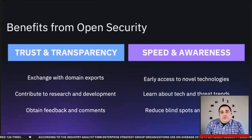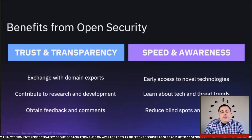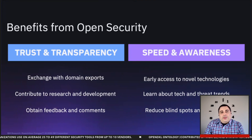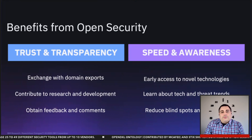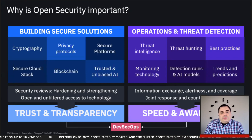The benefits that come from open security align to two key pillars. First, trust and transparency — the fact that you can see the code, the solution, the practice, and that it's doing what you expect it to do, with no hidden pitfalls. This is enabled by increased collaboration and the power of the crowd being brought to cybersecurity. Second, speed and awareness — having near real-time access to the latest innovations and research as it is developed, allowing you to speed time to value, which in this space means protection against the latest threats. These two pillars can furthermore be mapped into the two different phases of the overall cybersecurity lifecycle: the creation and building of secure solutions, and the operations and threat detection required to secure an enterprise.